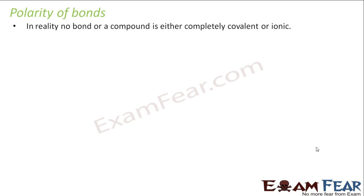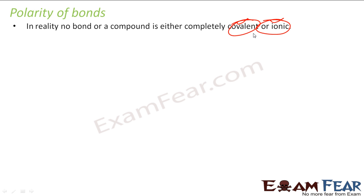Let's talk about polarity of bonds. We have something called ionic bond, polar bonds, and covalent bonds. But in reality, none of the bonds is purely covalent or ionic — only in theory do we have pure covalent and ionic bonds. In most cases, we do not have a pure covalent or ionic bond.